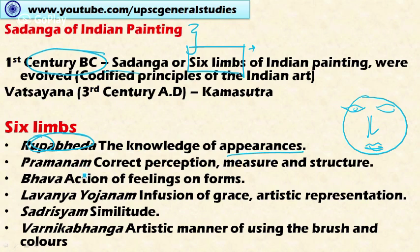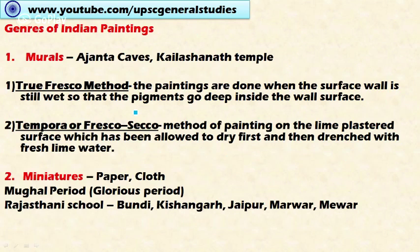The fourth principle is Lavanyayojanam, meaning the infusion of grace and artistic representation. The fifth is Sadrishyam — the painting should be similar to what it wants to represent. The sixth is Varnika Bhanga, meaning the artistic manner of using brush and colors. These are the six principles which must be kept in mind while painting.